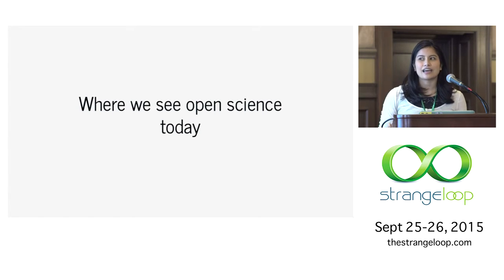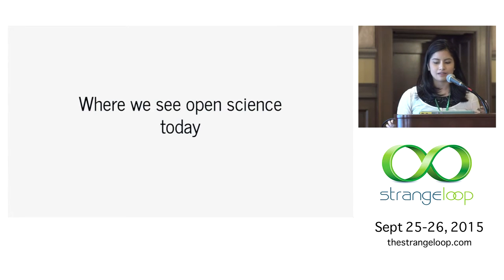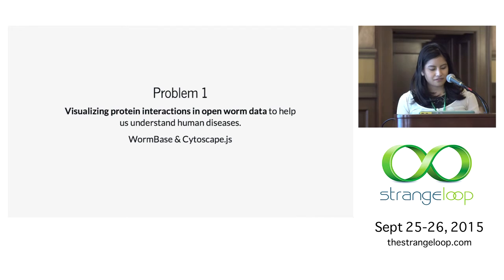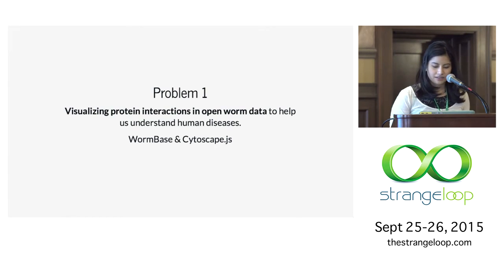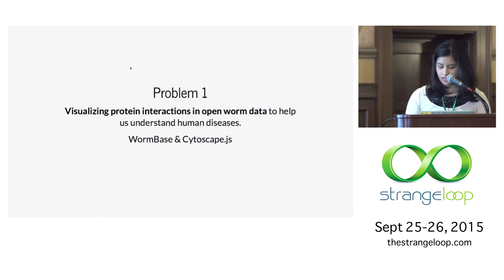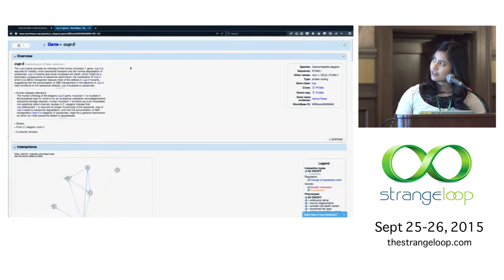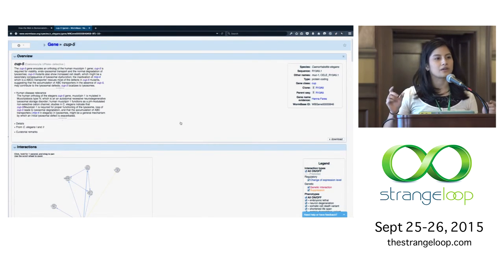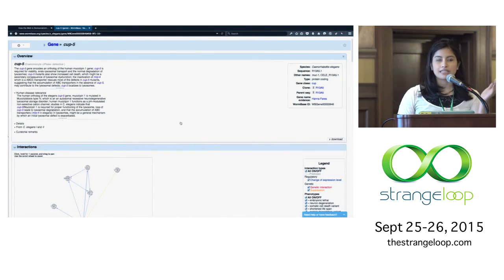Where do we see open science today? It's not always like that — we do see open science happening and people collaborating. Going back to those earlier problems I showed you: visualizing protein interactions and open worm data to help us understand human diseases. This is WormBase — I used to work for this. They collect all the information in C. elegans, that model organism I was telling you about earlier. Researchers come here to learn more. This gene here has an ortholog in humans present in neurodegenerative disease, so we can see how the protein it codes interacts, and this gives us insight into why that disease happens.